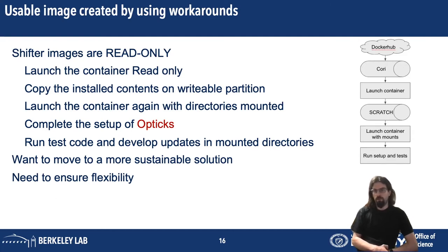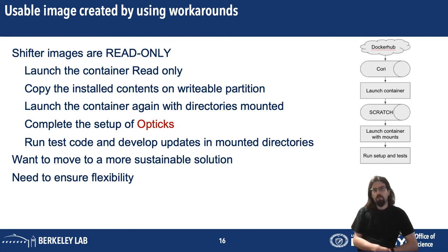A number of workarounds have been used to create a usable test image for the current stage of progress. Shifter images are read-only, so what we have done is launched the container in its read-only environment, copied its contents to a writable partition which can be accessed from within the image, and then launched those contents again with the correct directories mounted. This allows us to complete the setup of Opticks, including a number of write commands, and allows us to run test code, edit scripts, and develop code in mounted directories instead of in the raw image. We do want to move to a more sustainable solution — passing things to the Scratch directory on Perlmutter GPU is not ideal but works for development purposes.